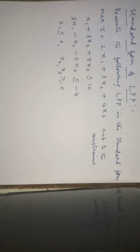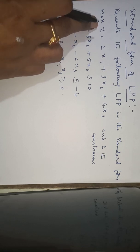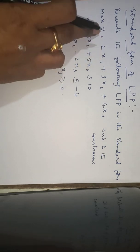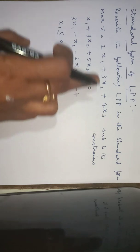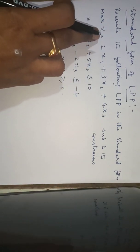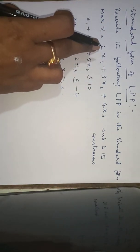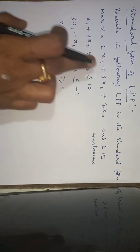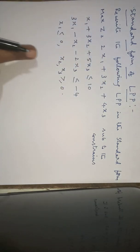To convert the given problem into the standard form, first we have to check whether the given objective function is a maximization type or not. If it is maximization type, we will keep it as it is. If it is not maximization type, we will convert it into the maximization type. Here this is a maximization type, so we will keep it as it is.